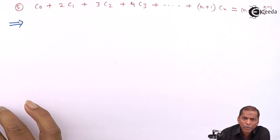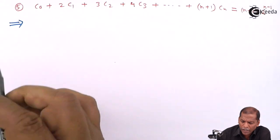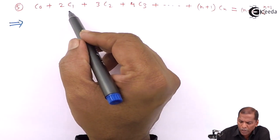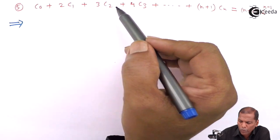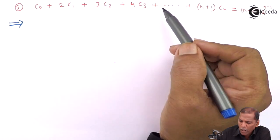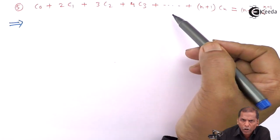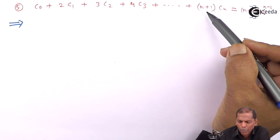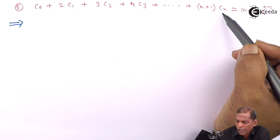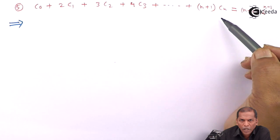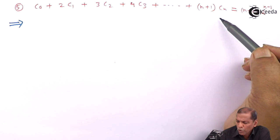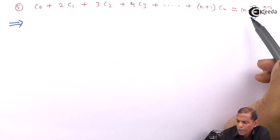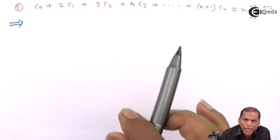In problem number 5, we have to show that C₀ plus 2C₁ plus 3C₂ plus 4C₃, going on, plus the last term (n+1)·Cₙ, is equal to (n+2) into 2 raised to n minus 1.